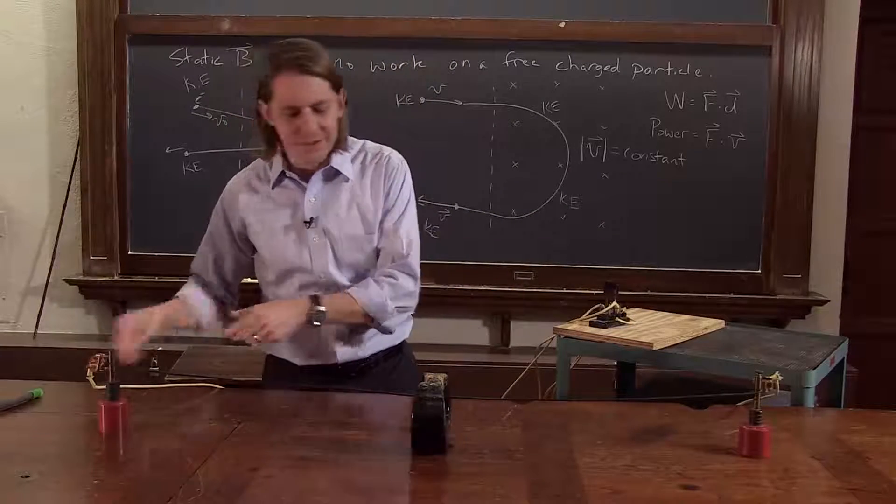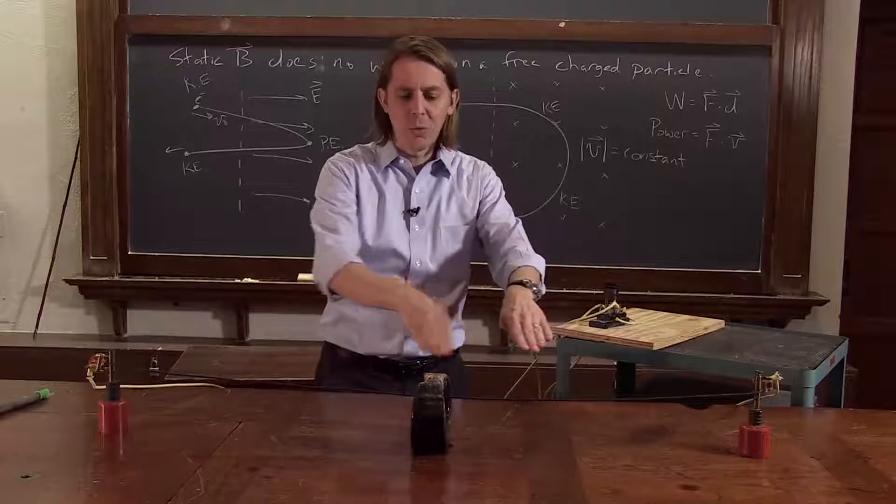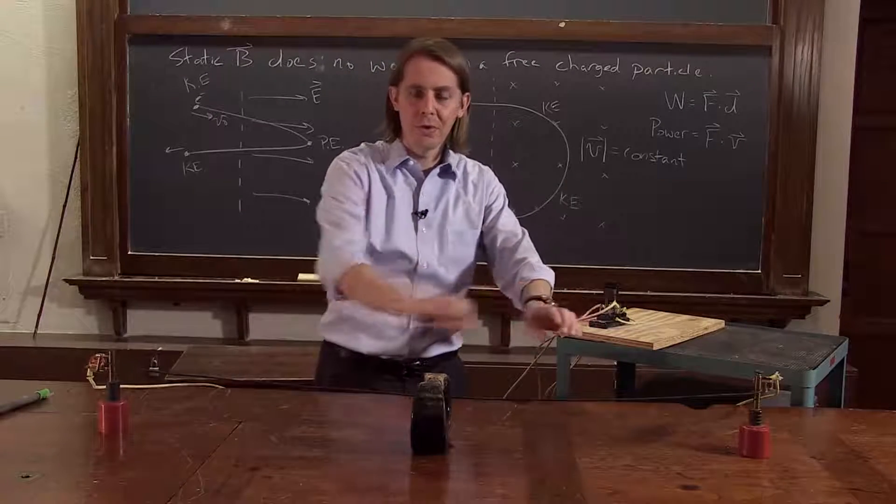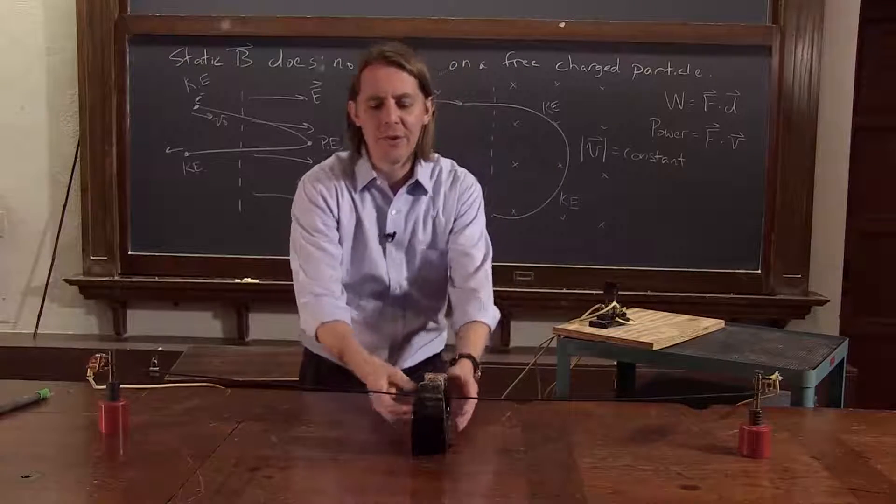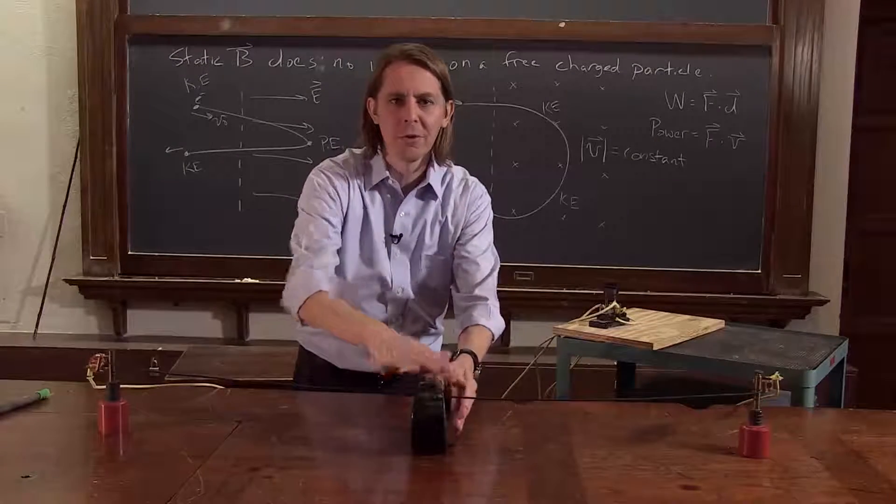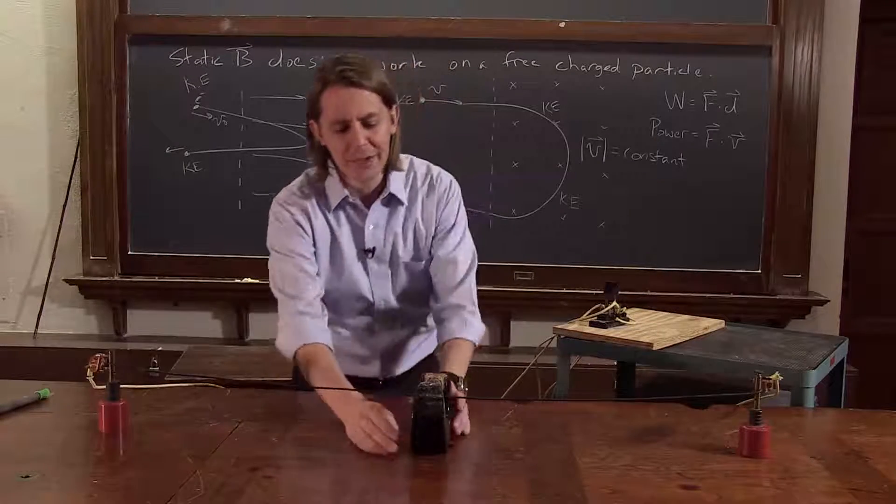Or we can look at this. This is a current carrying wire. That's a bunch of particles moving through a metal, a bunch of electrons moving through a metal. We turn on the current, and it's near a small region of a magnetic field created by this horseshoe magnet.